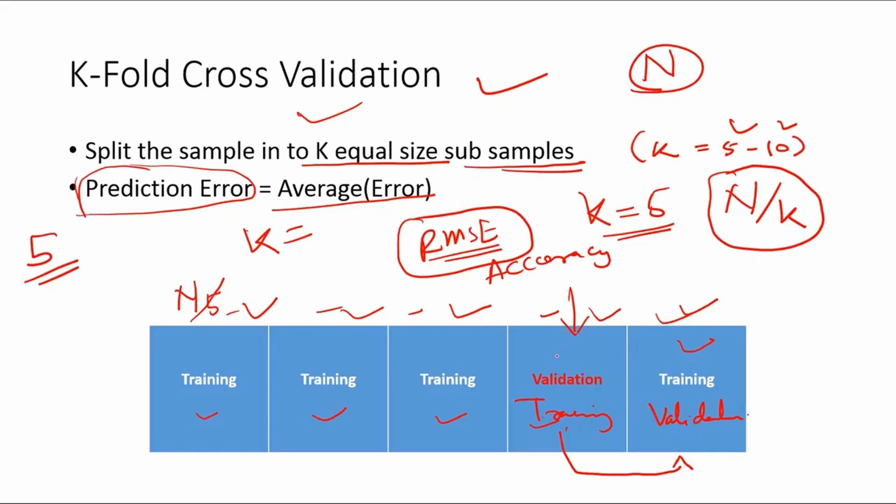Whereas here in this case, the validation set or the validation subsample is actually changing. So every sample, every data point would be part of training sample and part of validation sample.